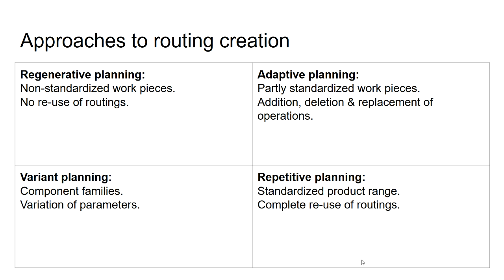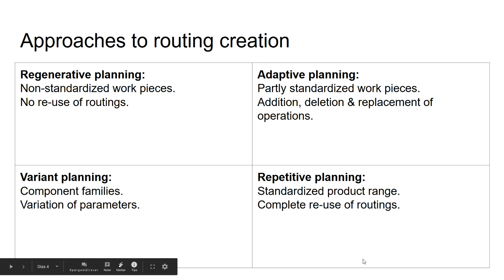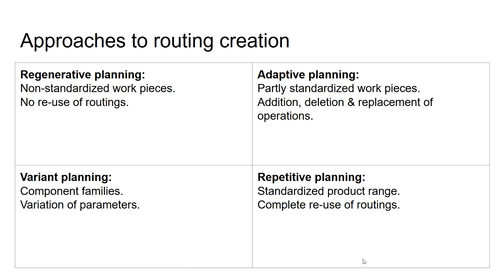When we talk about component families — where every component is part of a family and members differ only by geometrical dimensions or other aspects definable by a single parameter or set of parameters — then we can apply variant planning. Variant planning means taking existing routings and creating new routings by only adjusting various parameters. The operations remain the same; you are not deleting or changing operations, and you are not creating a routing from scratch — you are only adjusting certain parameters.